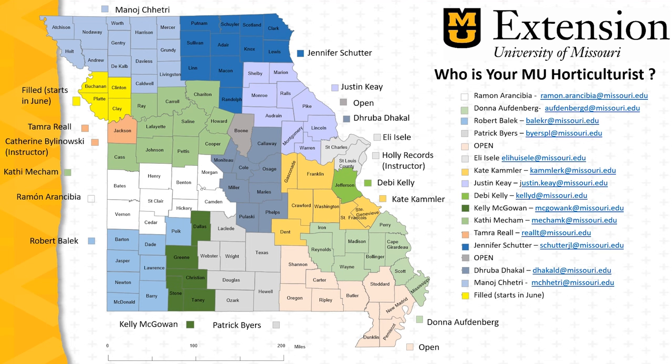For more information on the use of dormant sprays on fruit crops, reach out to your area horticulture field specialist. This map shows the territories of the field specialists here in Missouri. Identify your county and reach out to the specialist that has responsibilities for your county. If you live in a county that has an open position, reach out to a specialist that's close by — I'm sure they'll be able to help. This is Patrick Byers, horticulture field specialist with University of Missouri Extension.